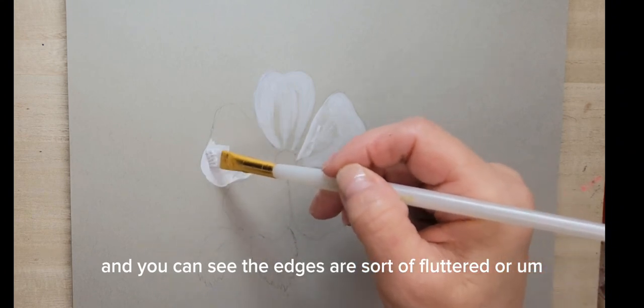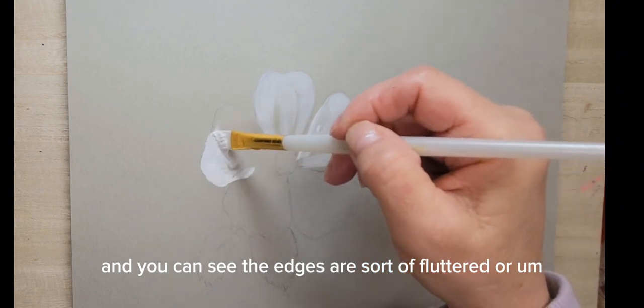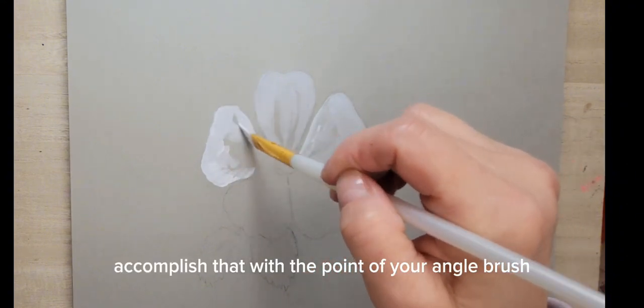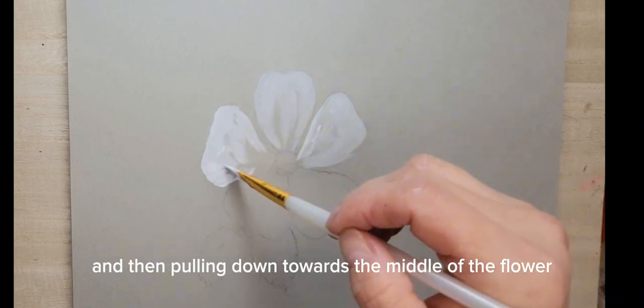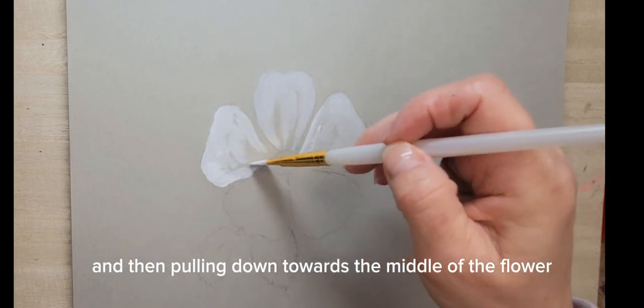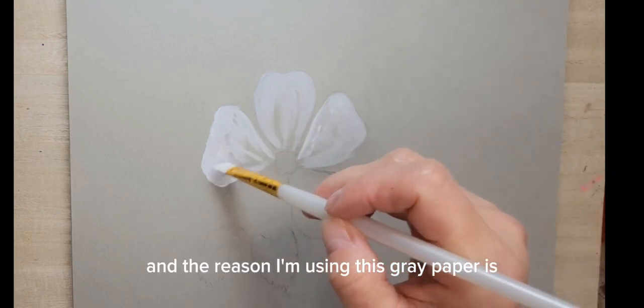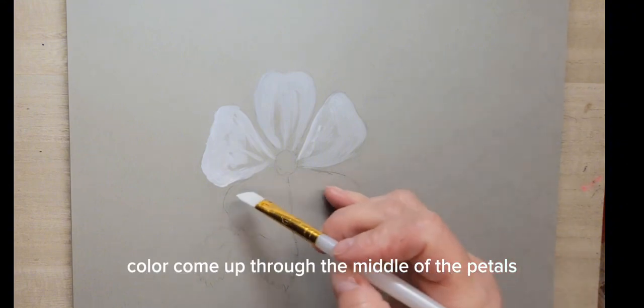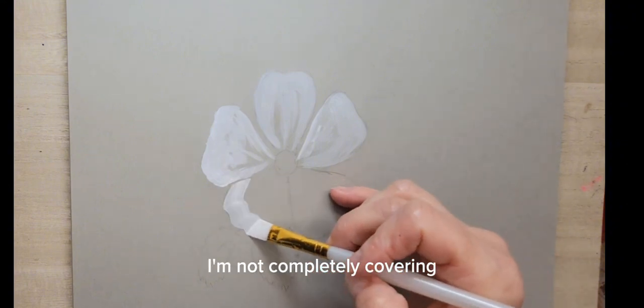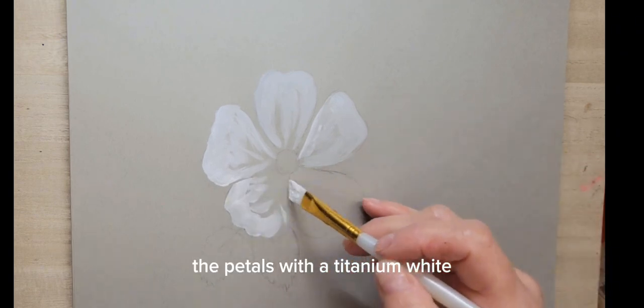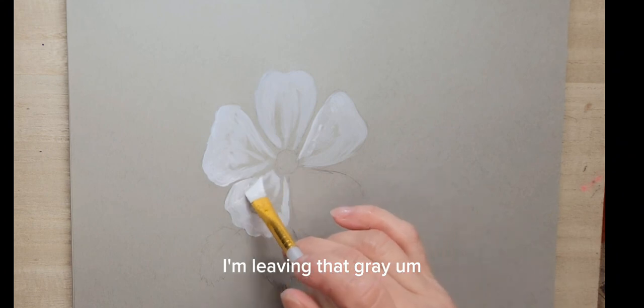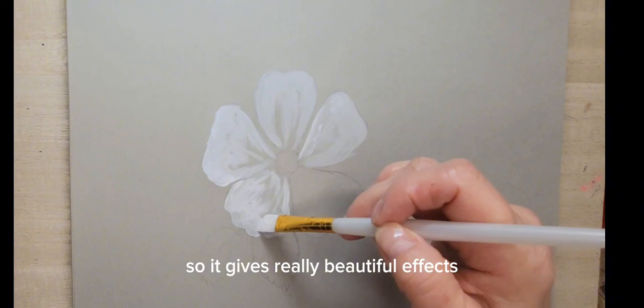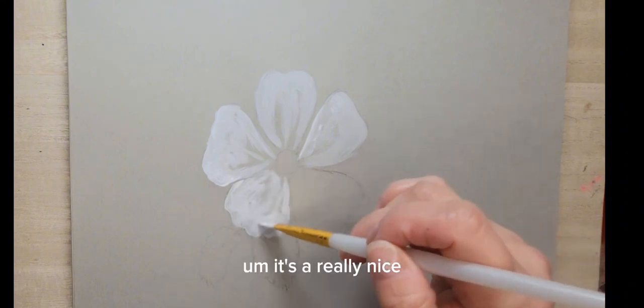I'm basing the petals with titanium white using an angle brush. You can see the edges are sort of fluttered or scalloped. You can easily accomplish that with the point of your angle brush and then pulling down towards the middle of the flower. The reason I'm using this gray paper is I want to see that gray color come through the middle of the petals. I'm not completely covering the petals with titanium white—I'm leaving that gray down towards the middle of the flower show through.